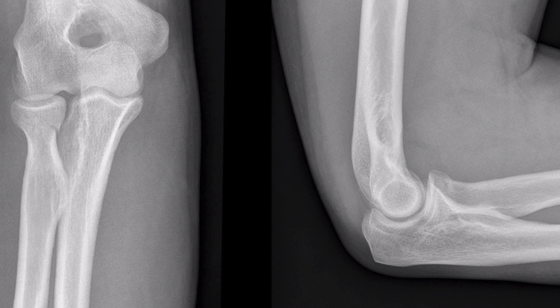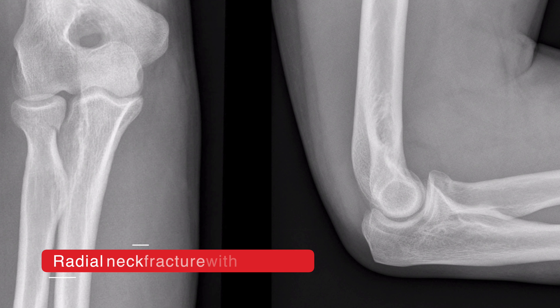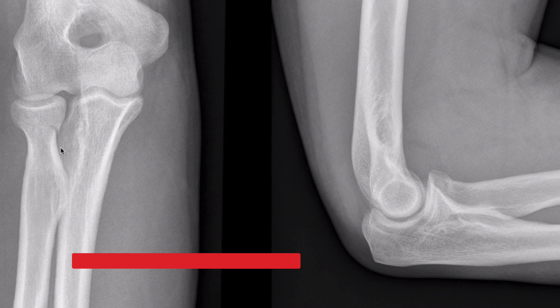Minimally displaced neck of radius fracture which does not involve the articular surface. This is associated with elevation of the anterior fat pad — the sail sign.